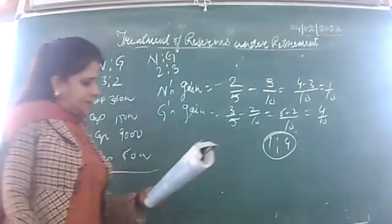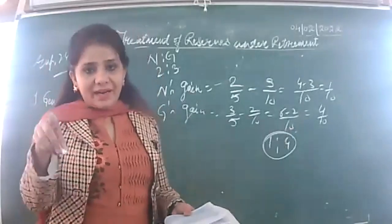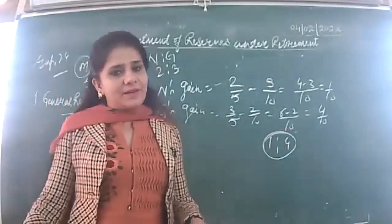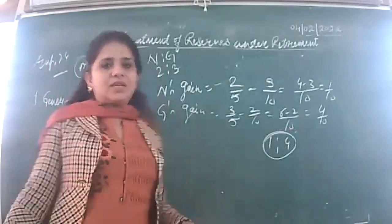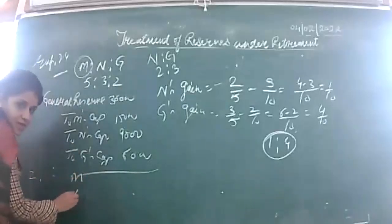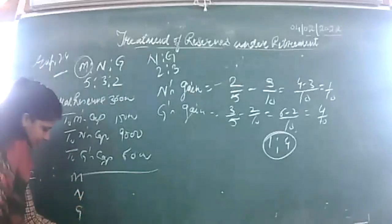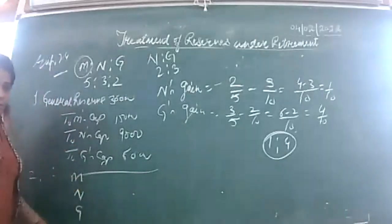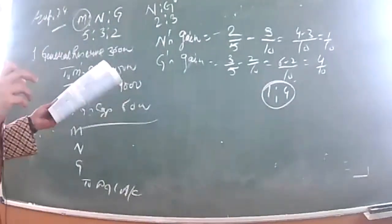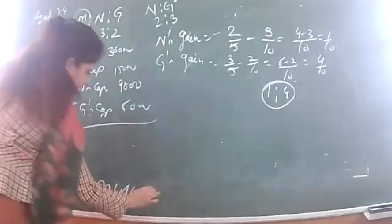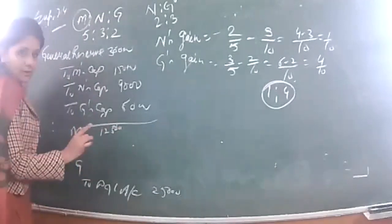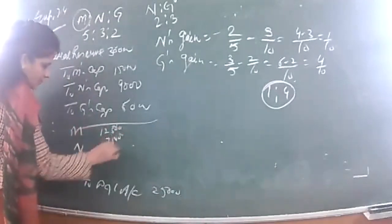P&L has a debit balance — that means it is a loss. When there is a loss, partners are debited and the loss is credited. Second entry: M's capital debited, N's capital debited, G's capital debited to P&L, among all partners in their old ratio. P&L was 25,000 — 5/10 is 12,500; 3/10 is 7,500; 2/10 is 5,000.